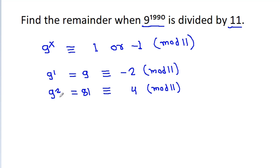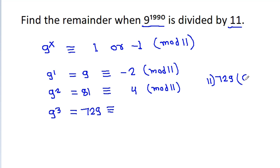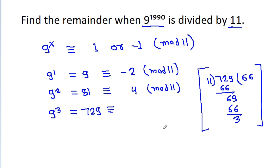And if we check x is equal to 3, then 9 power 3 is 729. And if we divide 729 by 11, 6 times 66 is 66, remainder 3. So it is 3 mod 11. And we can check by putting x equal to 4, 5, and so on.